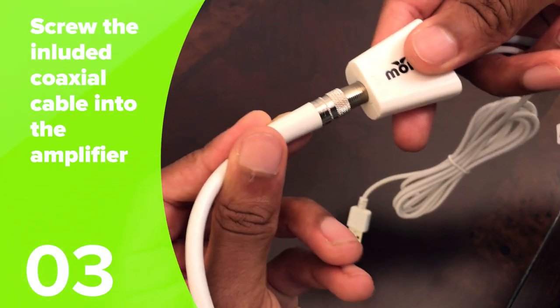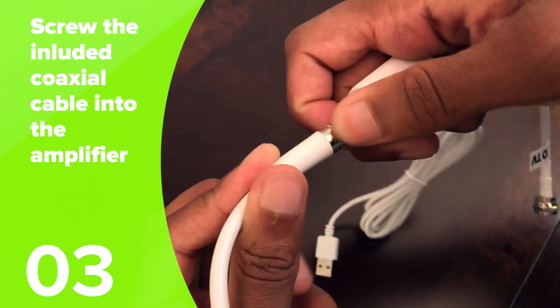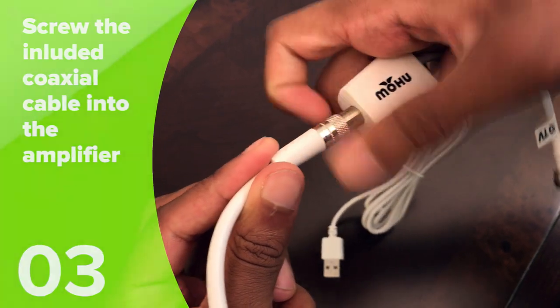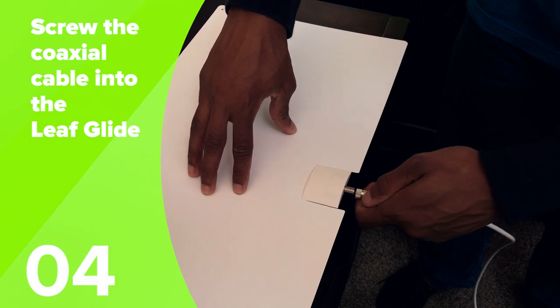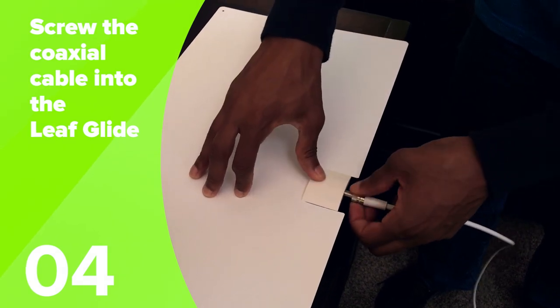Then screw the other end of the amplifier into the included coaxial cable. Connect the other end of the coaxial cable to your Mohu Leaf Glide Antenna.